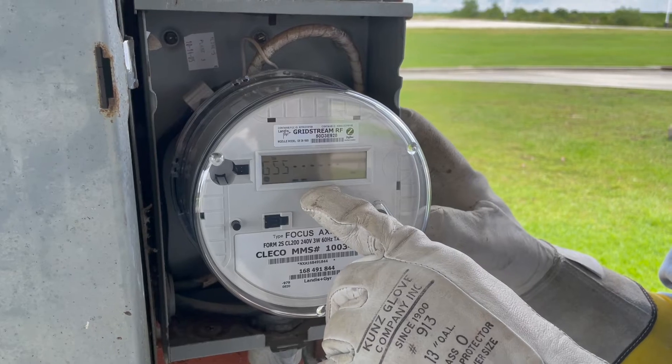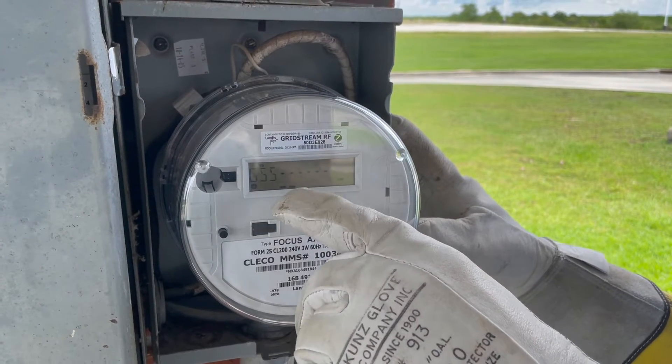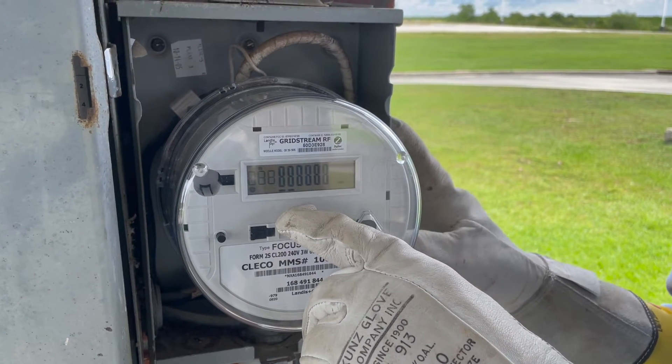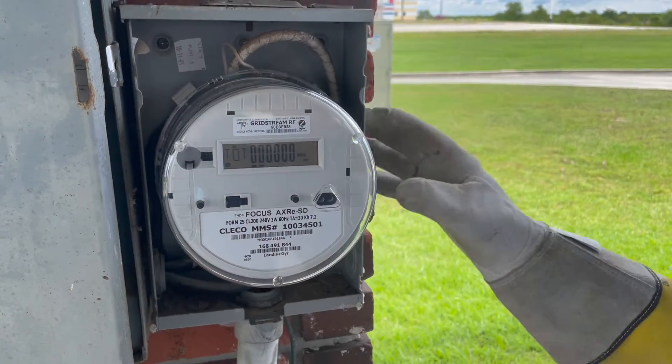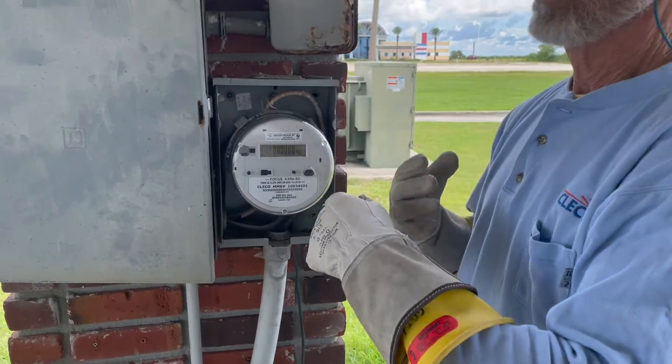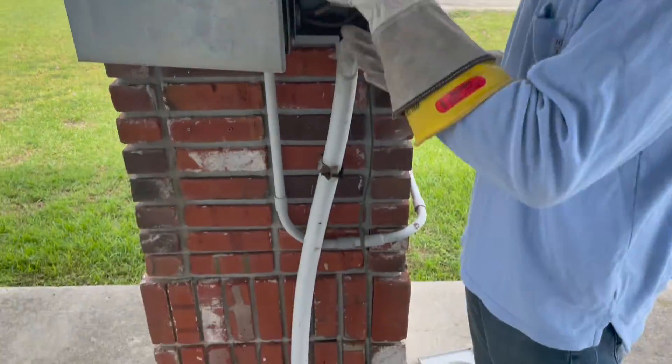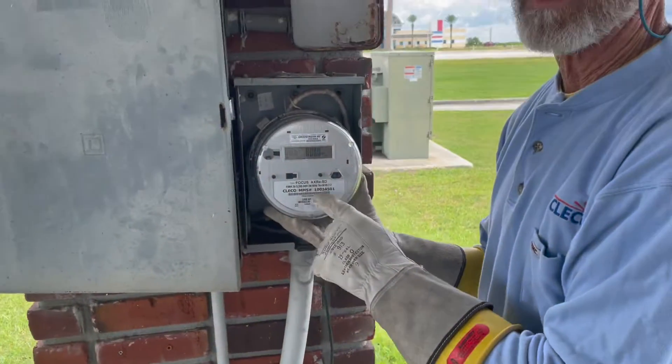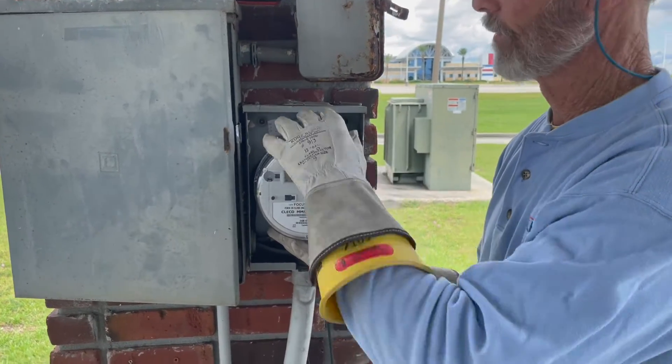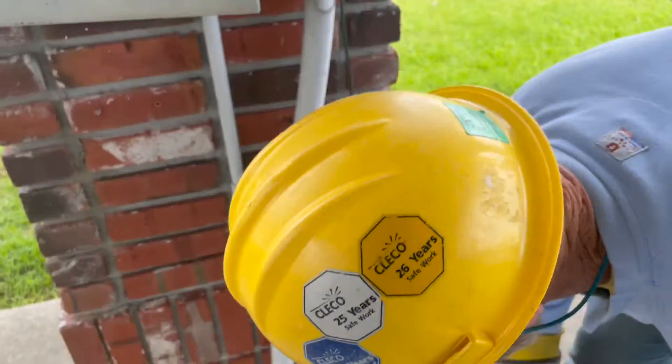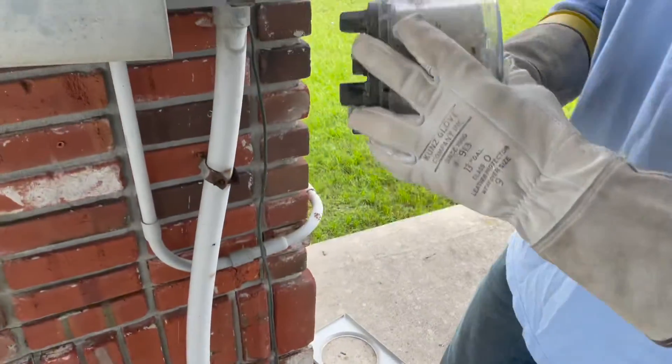This meter will meter, but it'll only meter like 86 percent because of the vectors, the way the phase angle vectors fall in on this type of meter compared to the 12S meter. So this is the incorrect application to the meter, but the meter does light up when you plug it in.